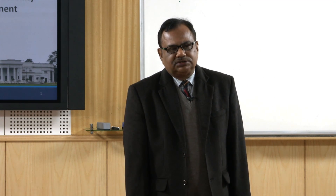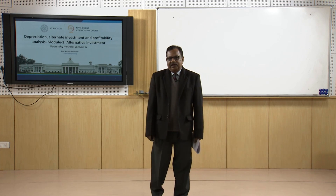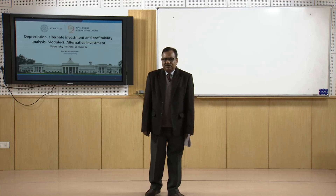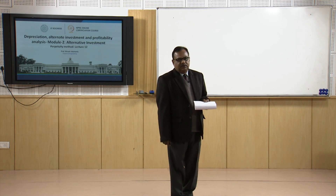Capitalized costs are annual costs divided by the interest rate. For example, if rupees 20,000 at the end of 10 years at 10 percent interest is required, one has to pay 1254.91 a year. This value has been calculated from the annuity formula which converts a future value to an annuity, as given in the slide. The capitalized cost becomes 1254.91 divided by 0.1, which is the value of i, coming out to be 12549.1. This means that if 12549.1 is invested today, it will become 32549.1 in 10 years.